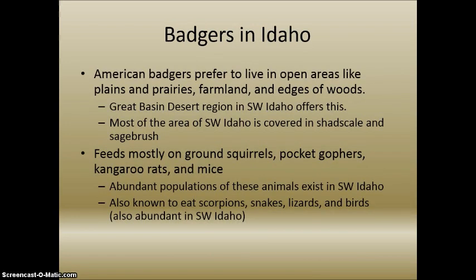American badgers prefer to live in open areas like plains and prairies, farmlands, and edges of woods. Here in the Great Basin Desert region of Southwest Idaho, we have plenty of that. Most of the area is covered in shadscale and sagebrush, which is very adaptable to the American badger's desire to dig. It feeds mostly on ground squirrels, pocket gophers, kangaroo rats, and mice here in Southwest Idaho, as there are very abundant populations of those animals. It's also known to eat scorpions, snakes, lizards, and birds, also abundant here in Southwest Idaho.